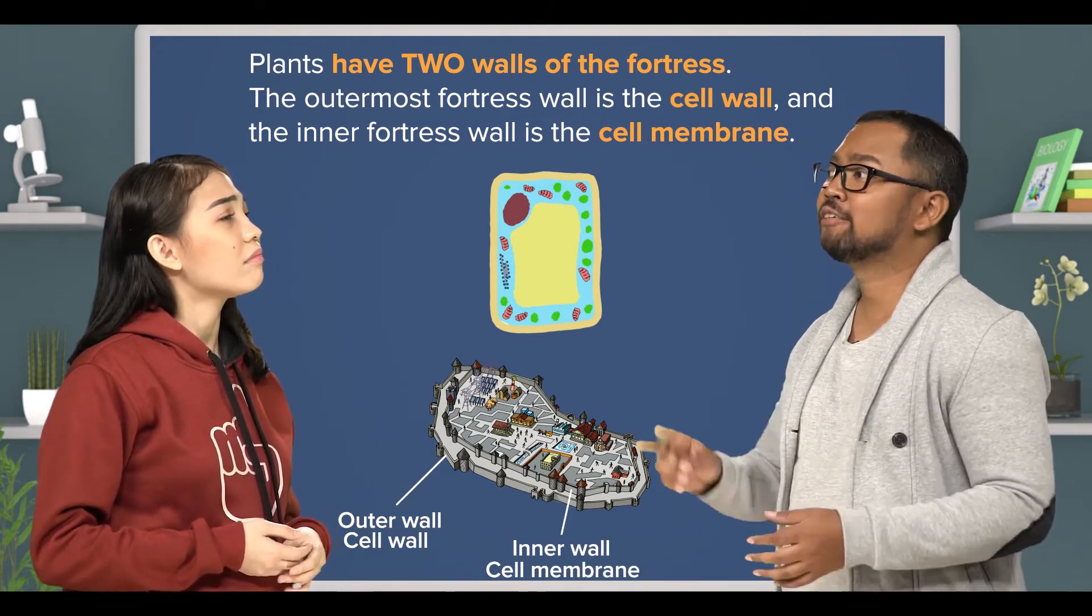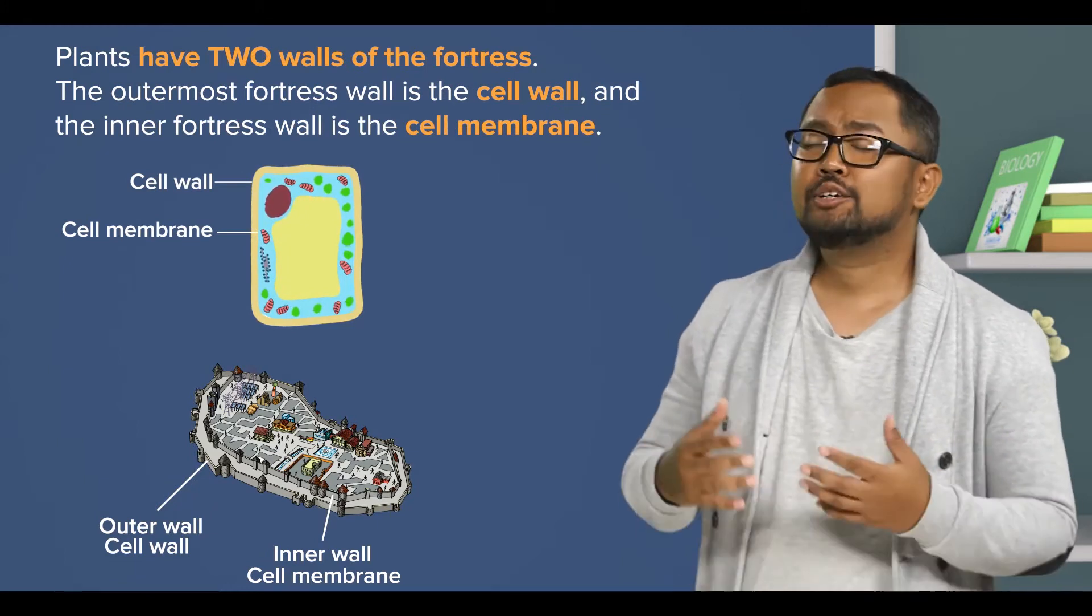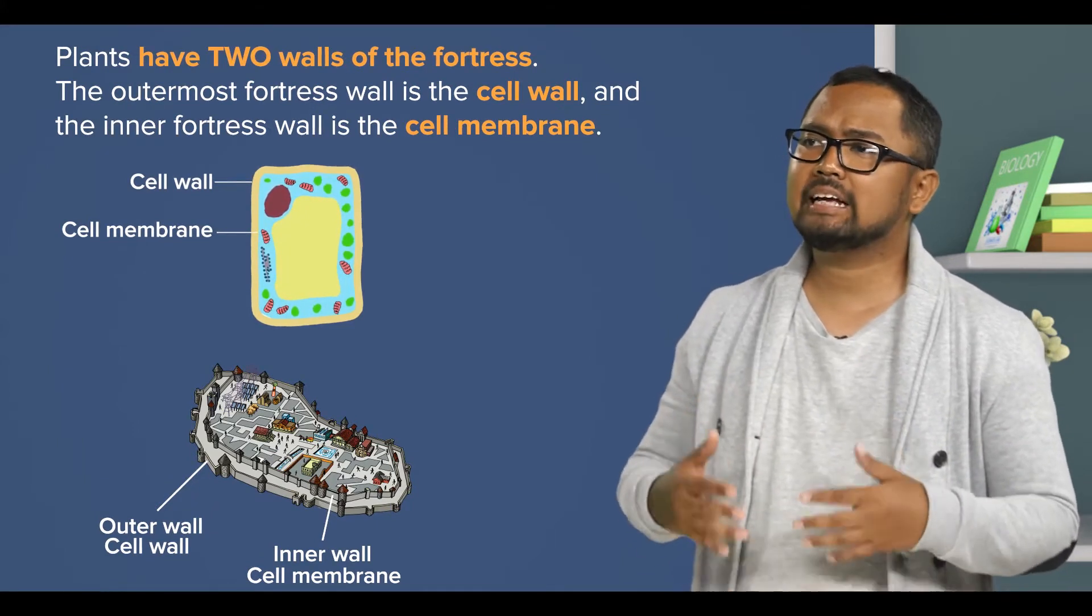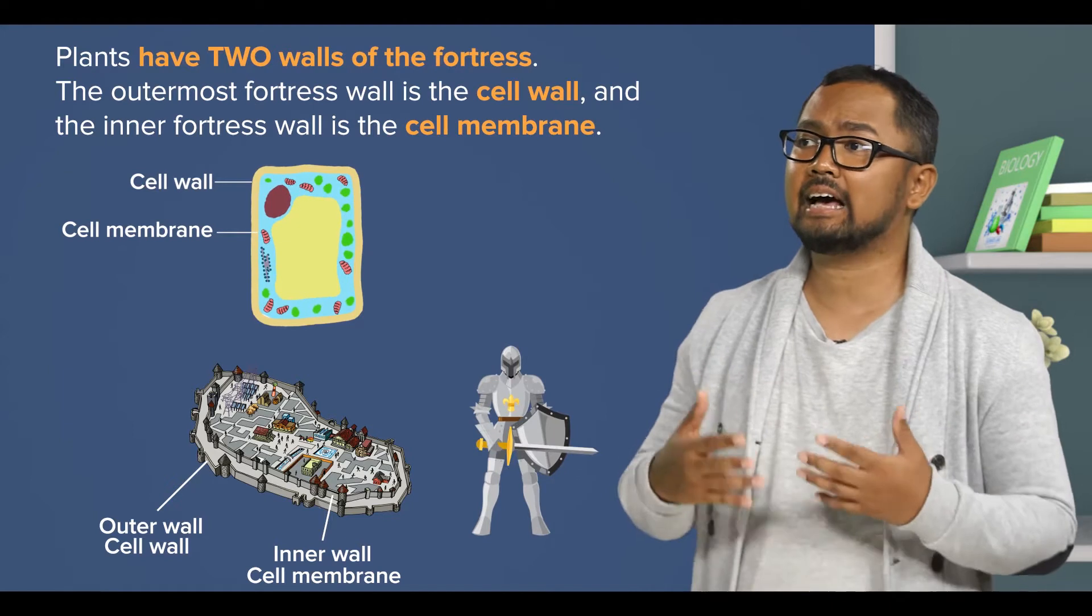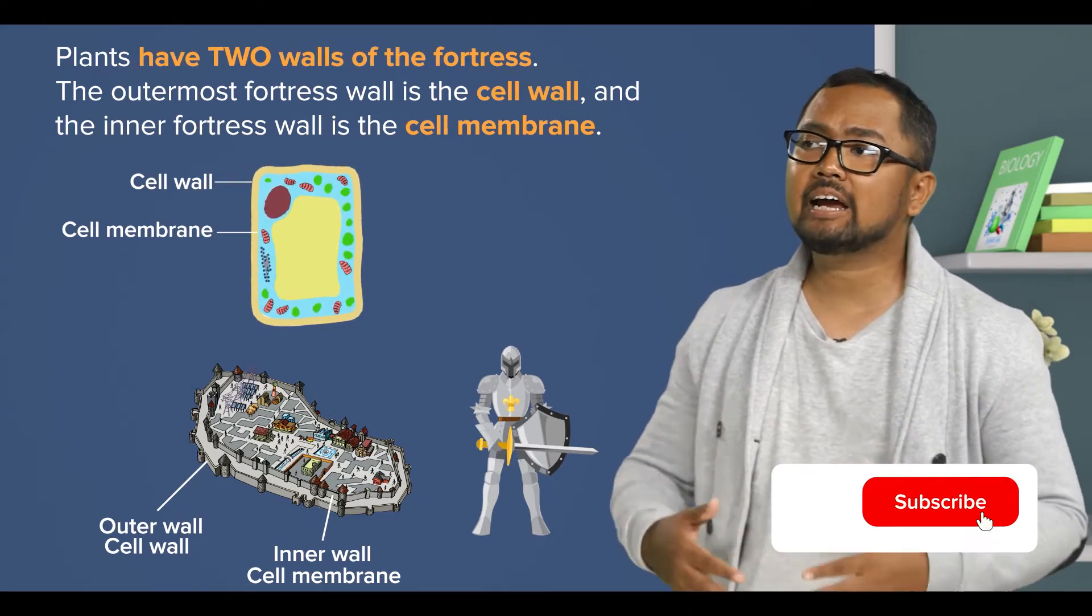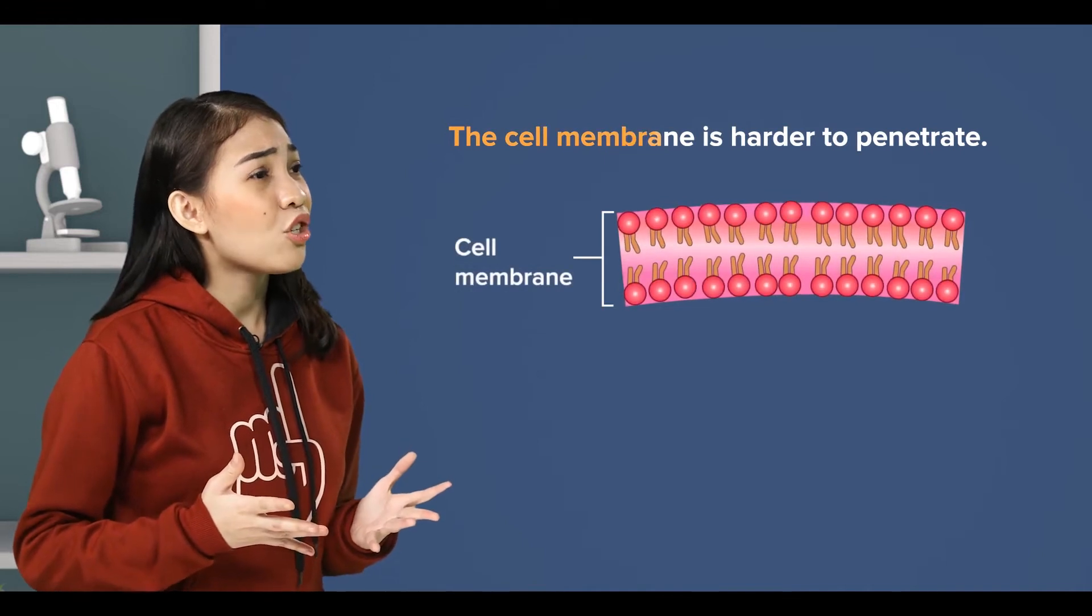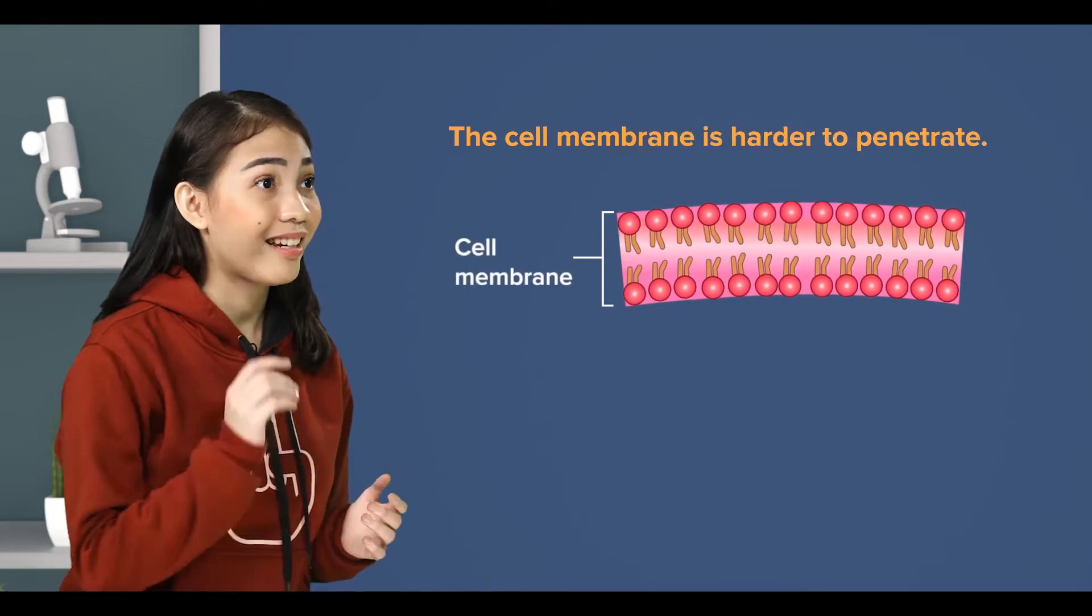Very good. So, plant cells have two layers of protection. Like in a fortress, usually, the inner wall is guarded by more guards than the outer fortress wall. Thus, it will get harder and harder to penetrate the next line of defense. I suppose that in a cell, the cell membrane should be the one harder to penetrate, right?